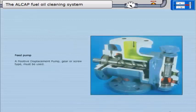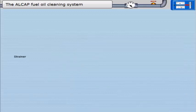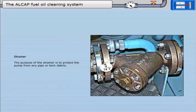Feed pump. A positive displacement pump, gear or screw type must be used. A screw type pump is a good solution. Strainer. The purpose of the strainer is to protect the pump from any pipe or tank debris. It should be installed close to the suction side of the pump.